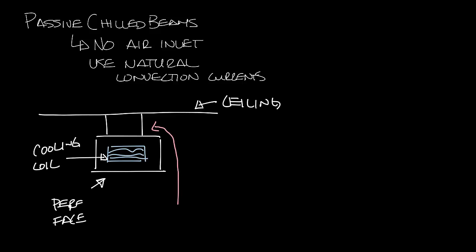So the way a passive beam works is warm air rises to the ceiling in a space. This warm air passes through the cooling coil. The cooling coil cools the air and this heavier cold air now falls into the space.